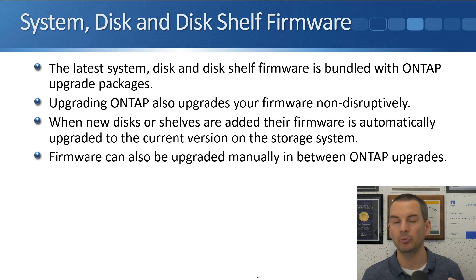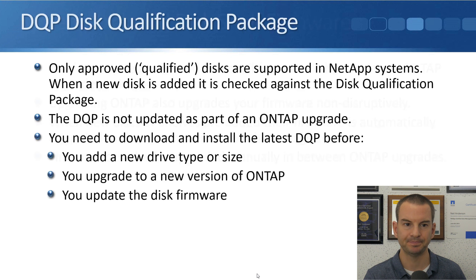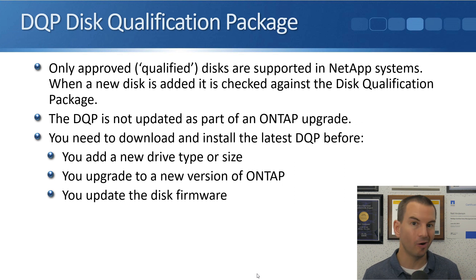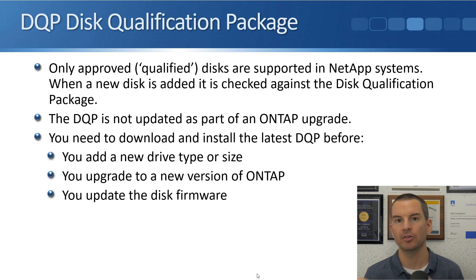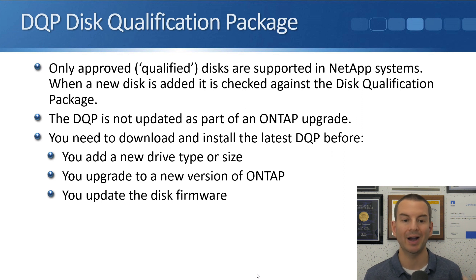Your firmware is automatically updated when you do an ONTAP upgrade, but you can also upgrade it manually in between ONTAP upgrades. For example, if there was a bug on your particular model of disk and there was a fix with a firmware update, you would want to do that firmware update. There is also the DQP — the Disk Qualification Package. Only approved, known as qualified, disks are supported in NetApp systems. When a new disk is added it is checked against the Disk Qualification Package, so you have to buy officially approved disks from NetApp. The DQP is not updated as part of an ONTAP upgrade unlike disk firmware, so you need to download and install the latest DQP before you add a new drive type or size, before upgrading ONTAP, or before updating disk firmware.